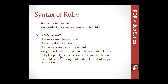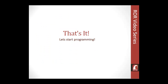Ruby keeps all instance variables private to the class. The dollar sign and the at sign are not thought of as data types but as scope resolution. When declaring a regular variable, you don't use any symbol. If you have a dollar sign in front of a variable, that means it's a global variable — only global variables have that.